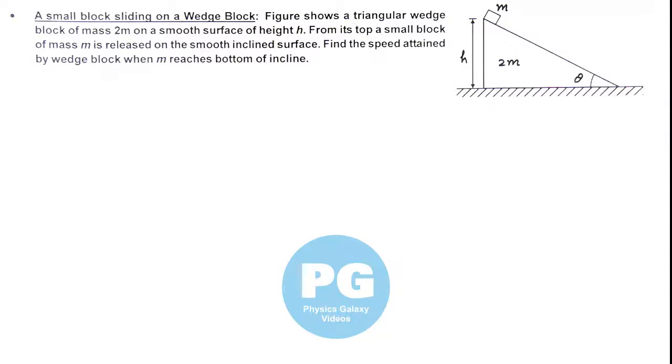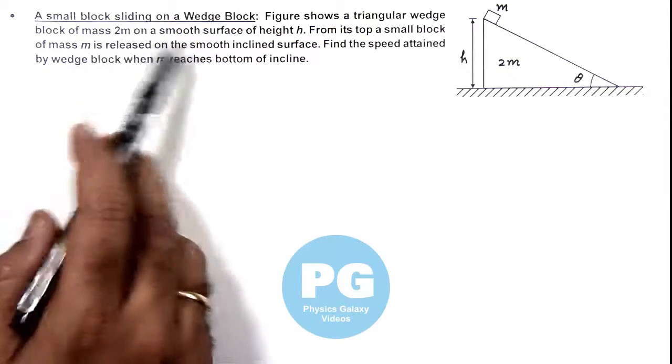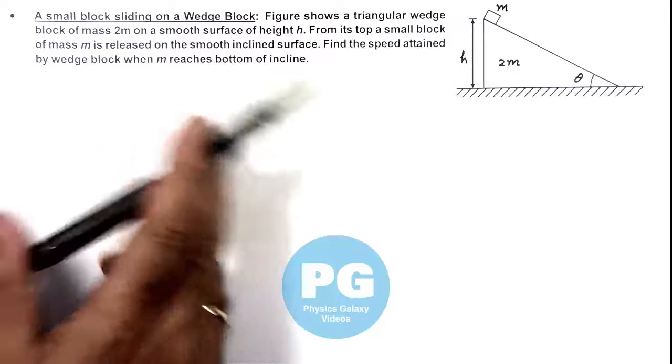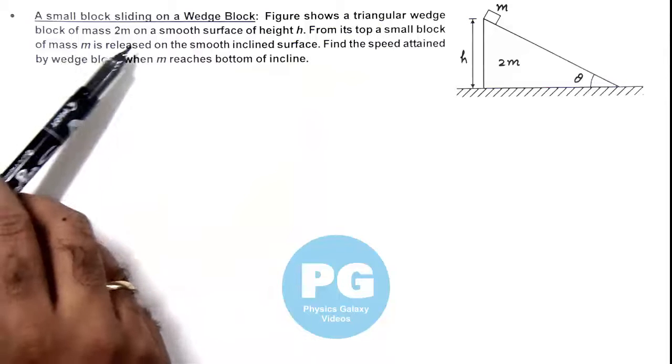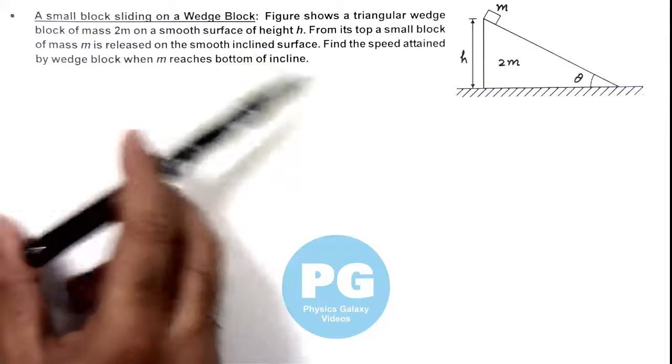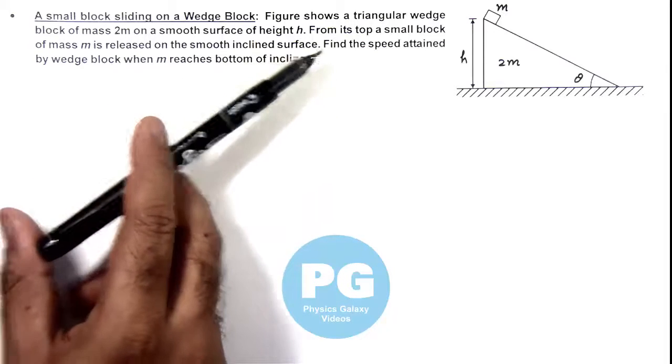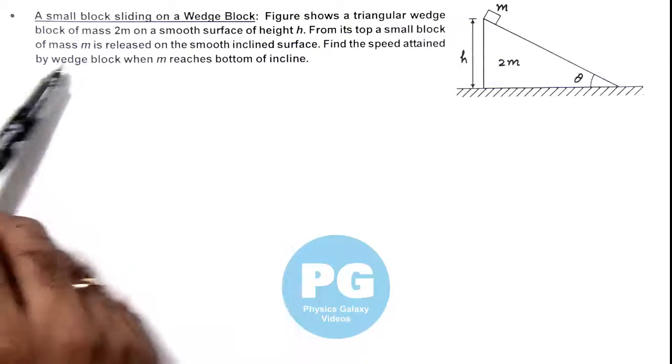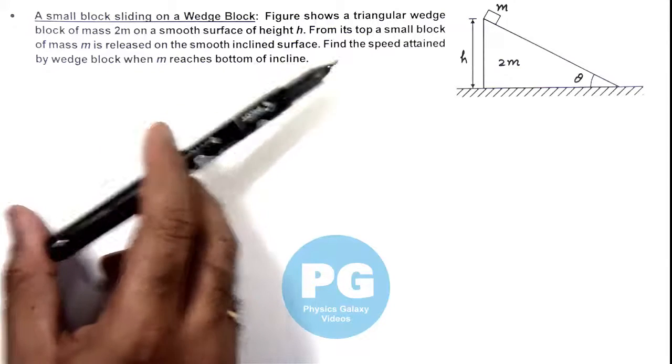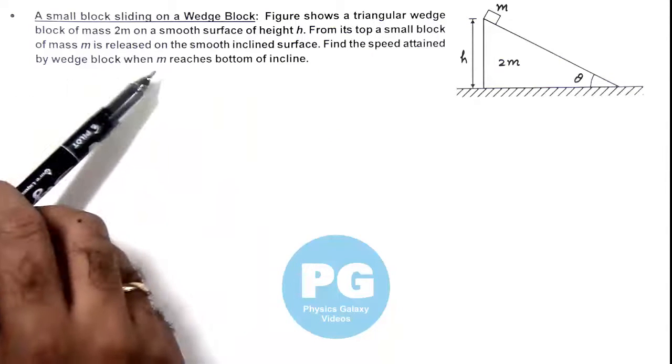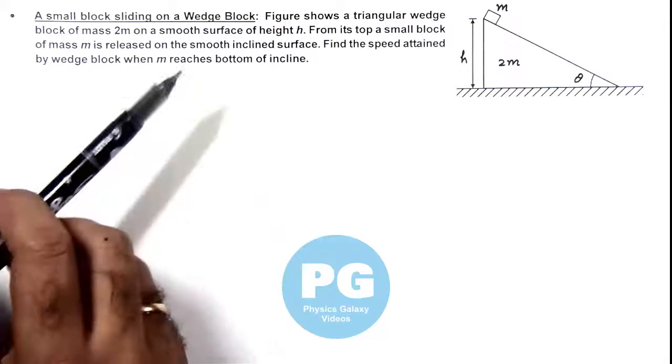In this illustration we'll analyze a small block sliding on a wedge block. Here you can see in the figure a triangular wedge block of mass 2m is placed on a smooth surface and it is of height h. From its top a small block of mass m is released on the smooth incline surface. We are required to find the speed attained by wedge block when this small block reaches the bottom of incline.